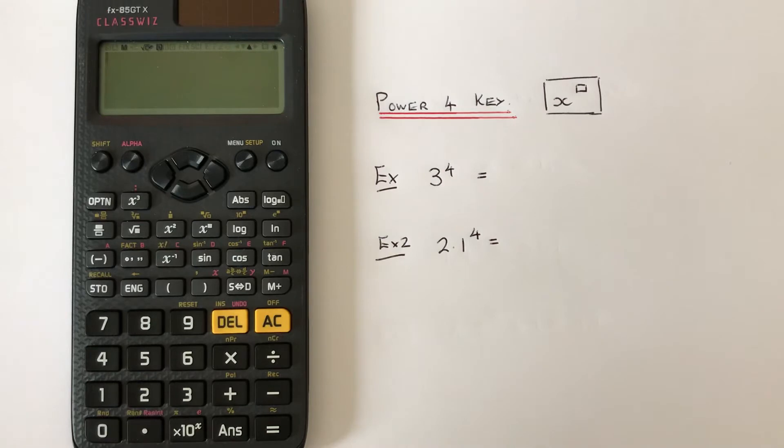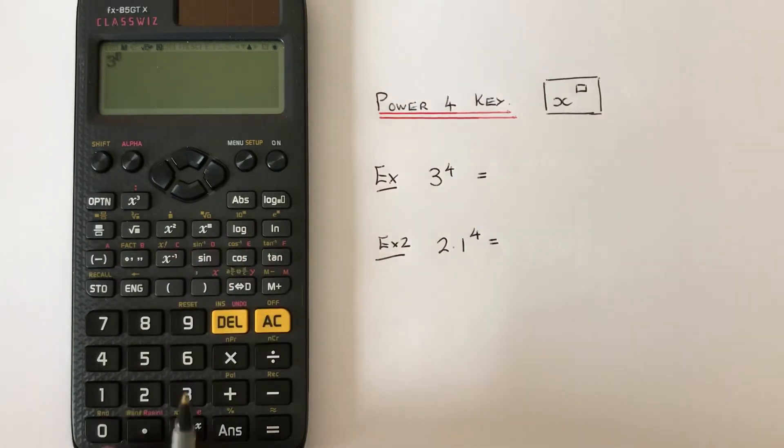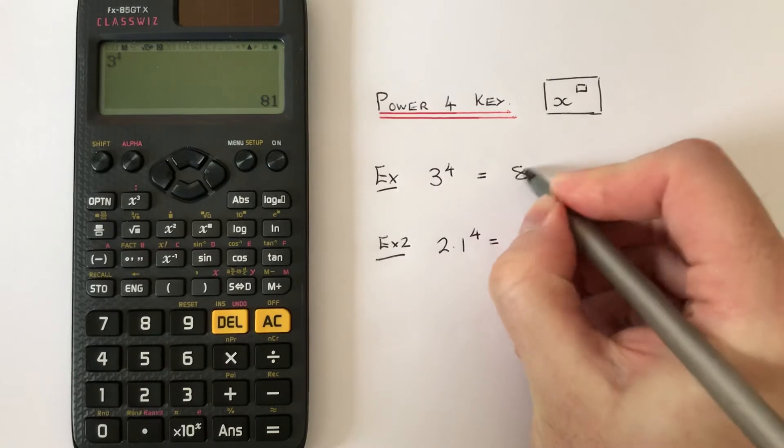We've got to work out 3 to the power of 4. If we type in 3 first, then press the power key, then press 4, and then press equals, we get the answer 81.